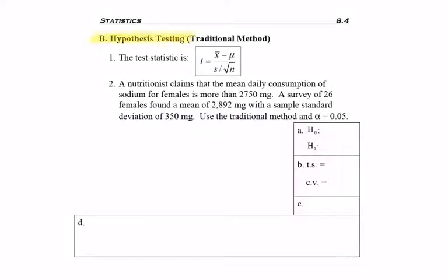So now let's go ahead and look at some examples about hypothesis testing. We'll start off with the traditional method, which means we're using a critical value. Here is the test statistic for testing a mean with an unknown standard deviation.